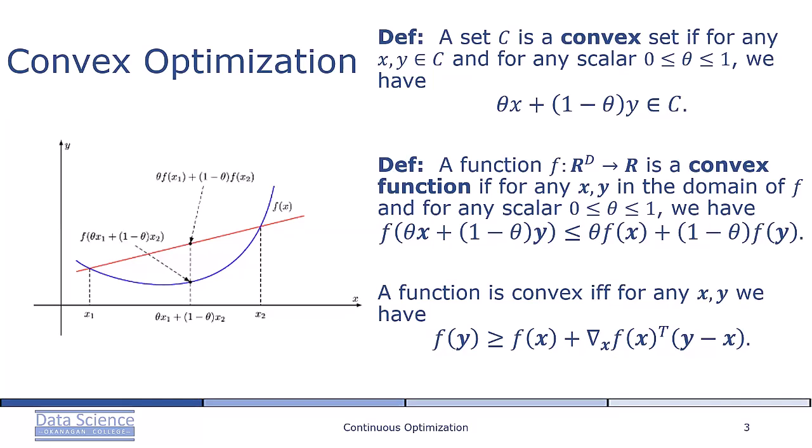Here's a definition. A set C is called convex if for any x and y in C, and for any scalar θ between 0 and 1, we have θx + (1-θ)y is in set C.